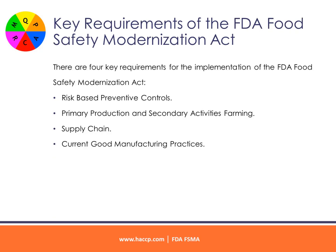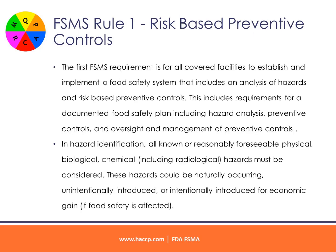Key Requirements of the FDA Food Safety Modernization Act: There are four key requirements for the implementation of the FDA Food Safety Modernization Act. The first requirement is for all covered facilities to establish and implement a food safety system that includes an analysis of hazards and risk-based preventive controls. This includes requirements for a documented food safety plan covering hazard analysis, preventive controls, and oversight and management of preventive controls. In hazard identification, all known or reasonably foreseeable physical, biological, and chemical including radiological hazards must be considered.